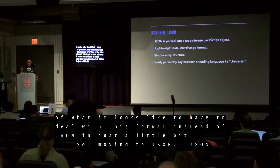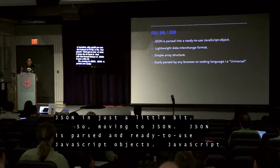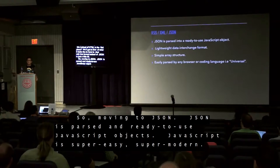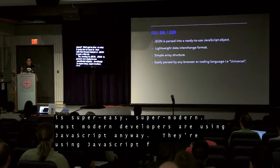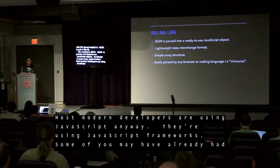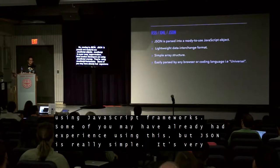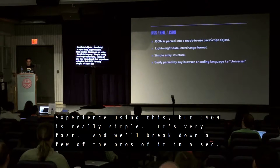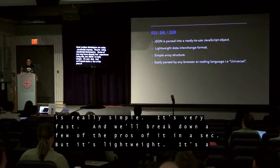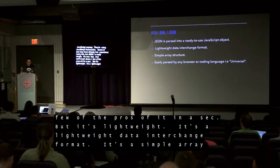So we're going into JSON. JSON is parsed and ready-to-use JavaScript objects. JavaScript is super easy, super modern. Most modern developers are using JavaScript frameworks anyway. But JSON is really simple, very fast, and lightweight — it's a lightweight data interchange format.